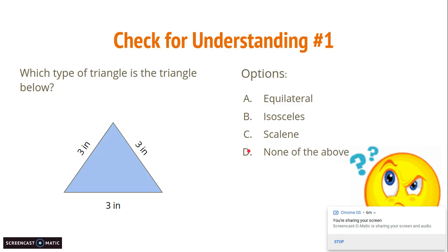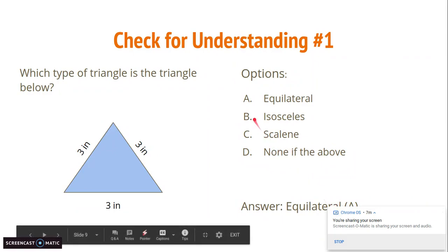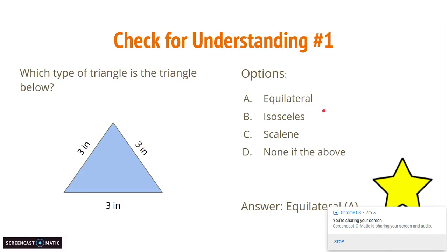All right, let's walk through this question. Since each one of these sides is three inches long, and we know that a triangle with three equal sides is an equilateral triangle, so the answer is equilateral, which is A. Don't worry if you didn't get the question right — we're going to have a couple more opportunities to answer another question, so no worries.